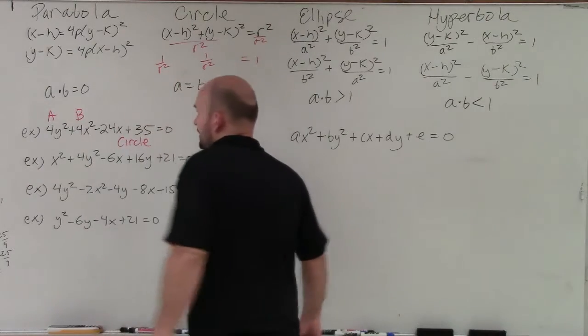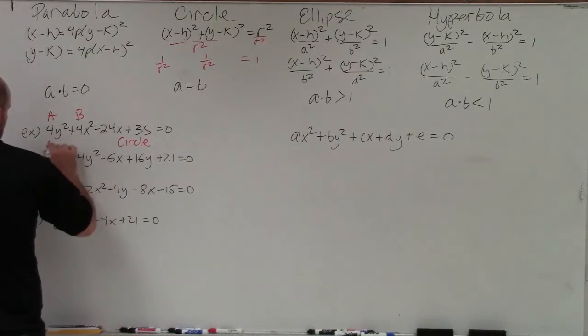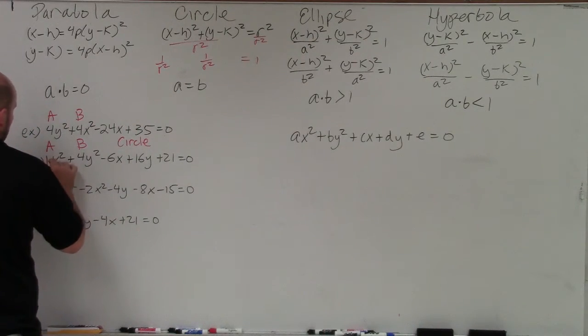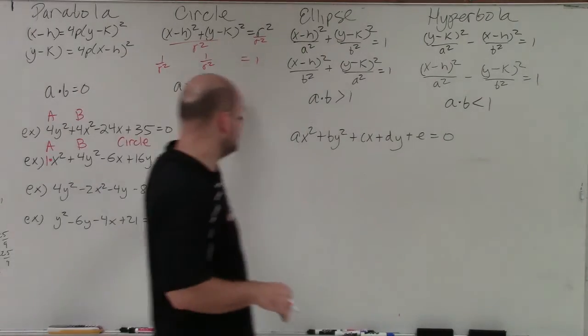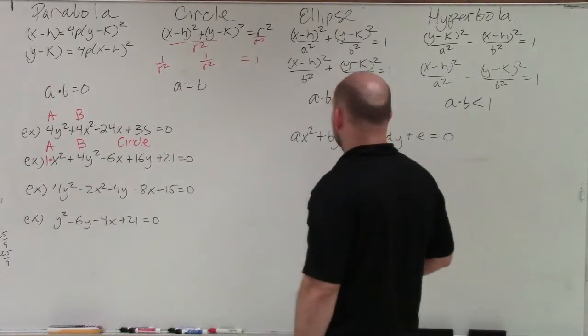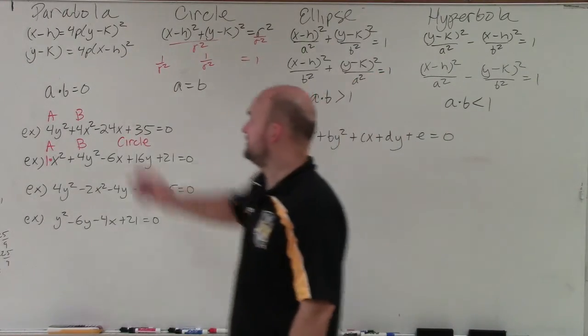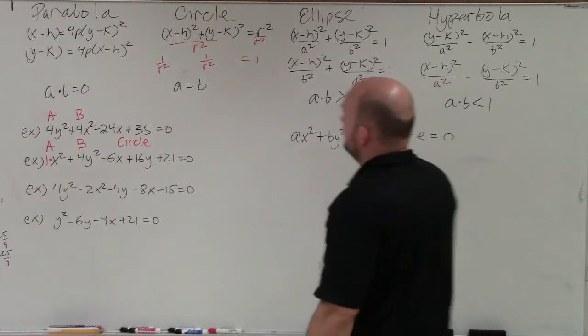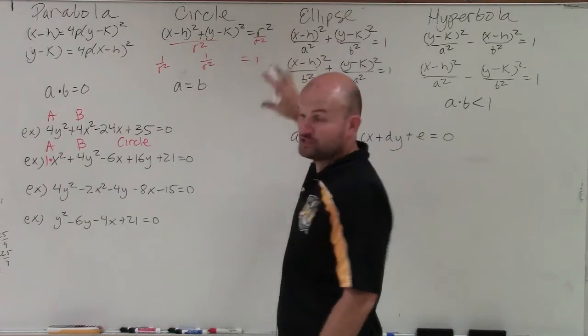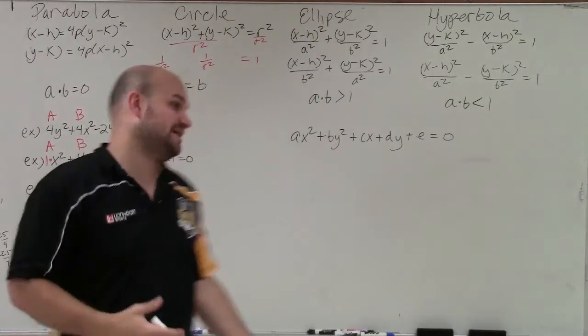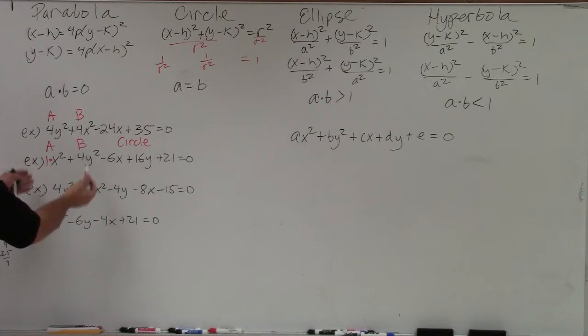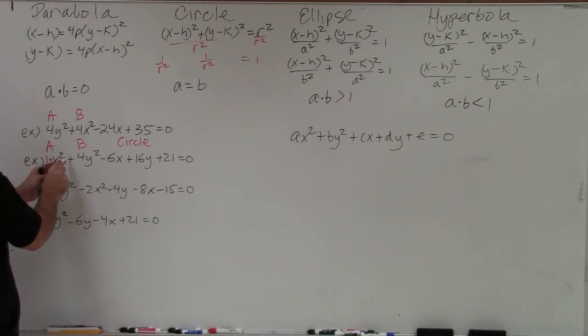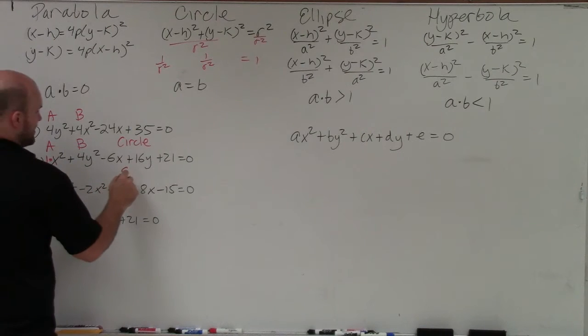In the next example, I have my a here as 1 and b is 4. They're not the same. So it's not a circle. They don't multiply—1 times 4 does not multiply, give me 0. But 1 times 4 multiplies to give me a positive number, which is 4, which is going to make this an ellipse. Again, if you were to complete the square, you would have the addition between your x and your y terms. But they wouldn't be exactly the same. So that's why that's an ellipse.